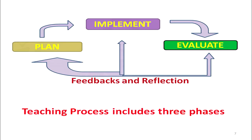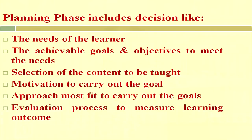The teaching process includes three phases: plan, implement, and evaluate. After evaluation with the help of feedback, we re-plan. The planning phase includes decisions about the needs of the learner, achievable goals and objectives, selection of content to be taught, motivation to carry out the goal, the approach most fit to carry out the goals, and the evaluation process to measure learning outcomes.